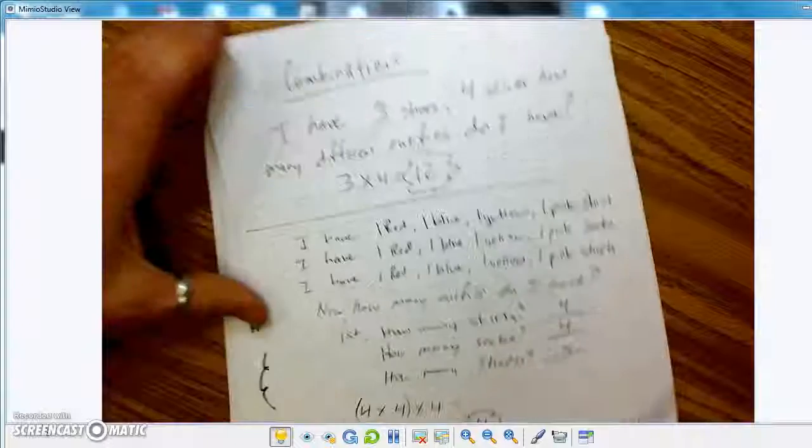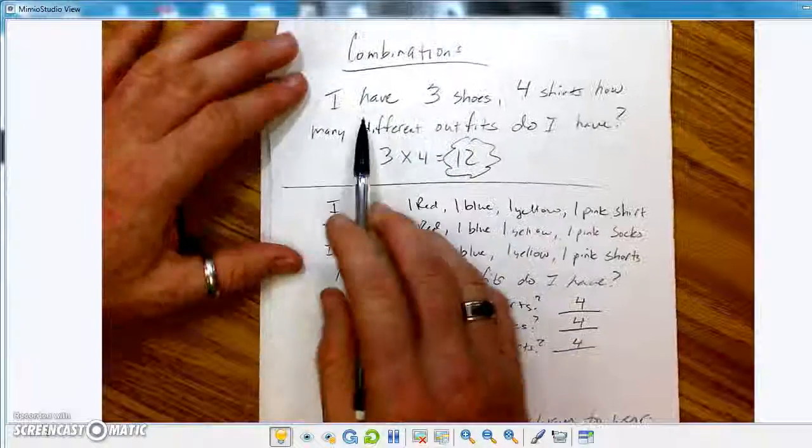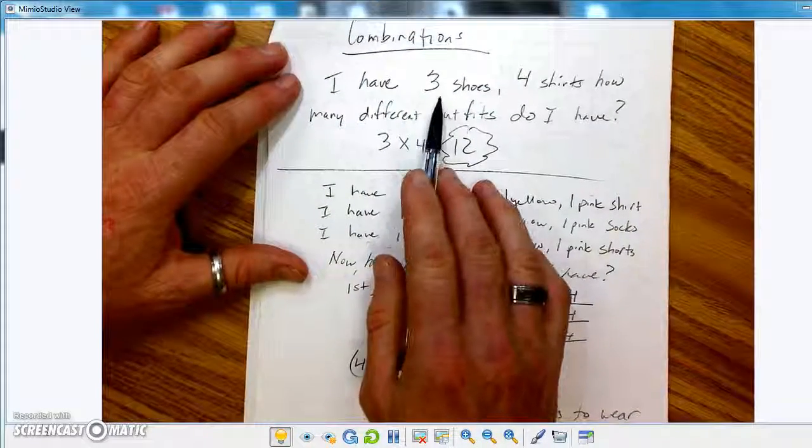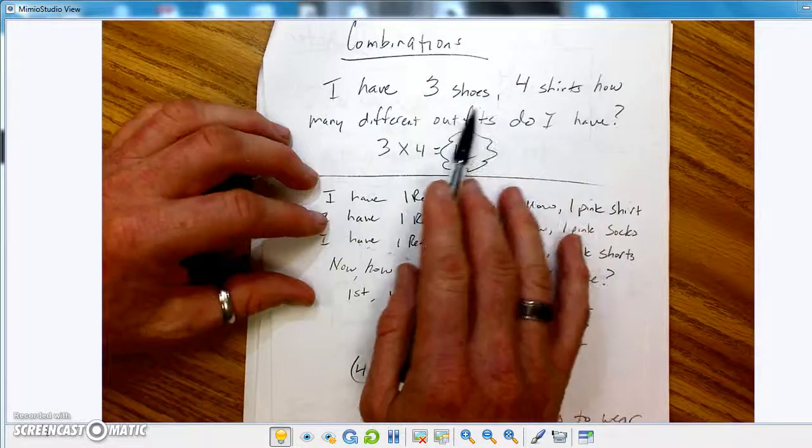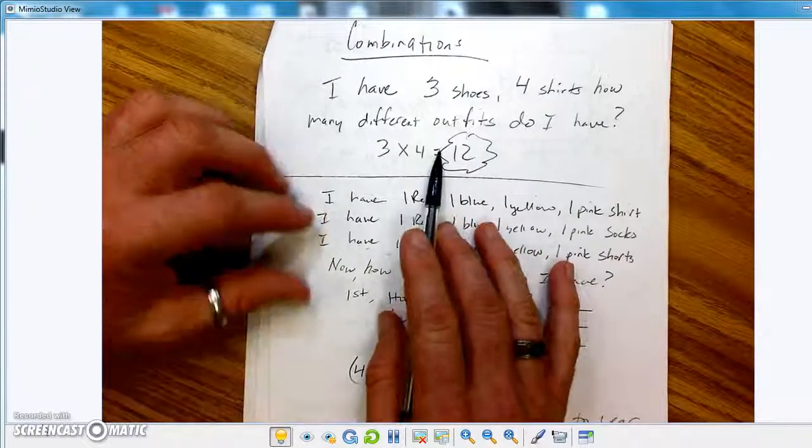All right, next. Combinations are usually pretty simple. Most of the time, you just take the numbers and multiply them. So, I have 3 shoes. Okay, I've got 4 shirts. So, how many outfits? You just go 3 times 4 and you get 12.